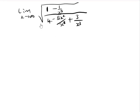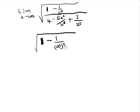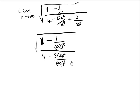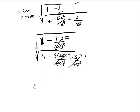If we substitute x to be infinity, we have the square root of 1 minus 1 divided by infinity cubed, all over 4 minus 5 times infinity squared divided by infinity cubed, plus 3 divided by infinity. The terms with infinity in the denominator all go to zero, so we are left with the square root of 1 divided by 4.